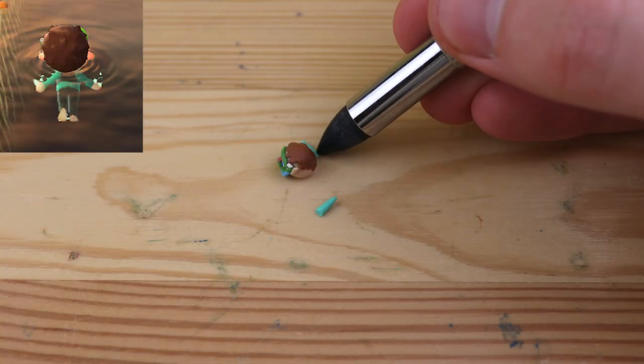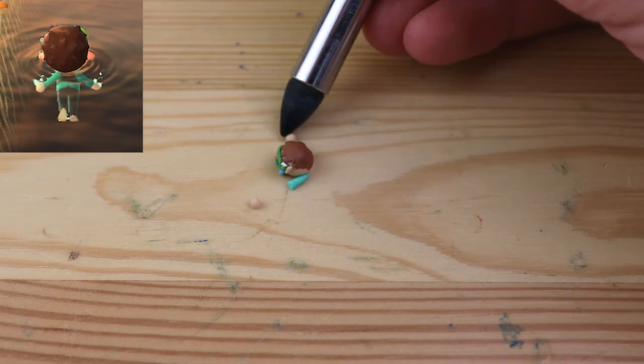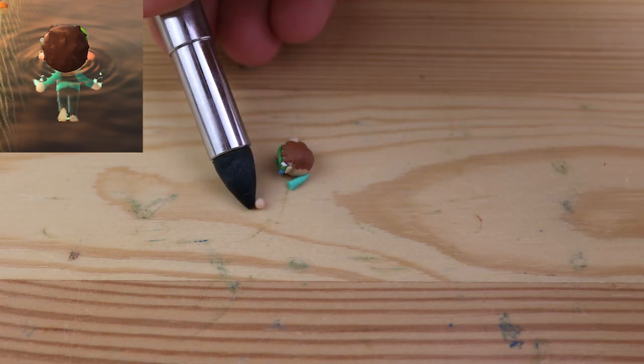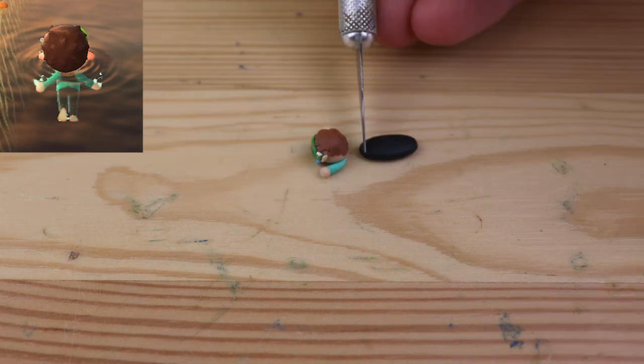These will be the arms. There's some different varieties of diving suits you can choose, some different colors and designs. But I like this one. This is the one you can get from the Nook Mile shop.